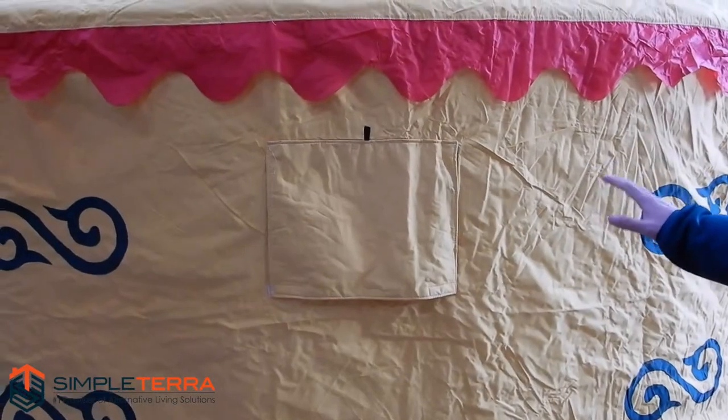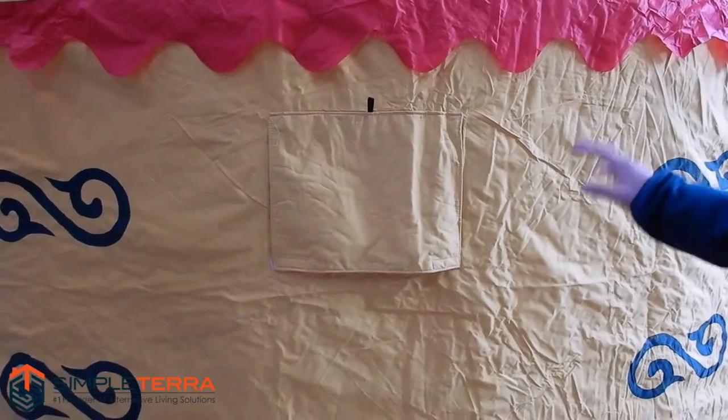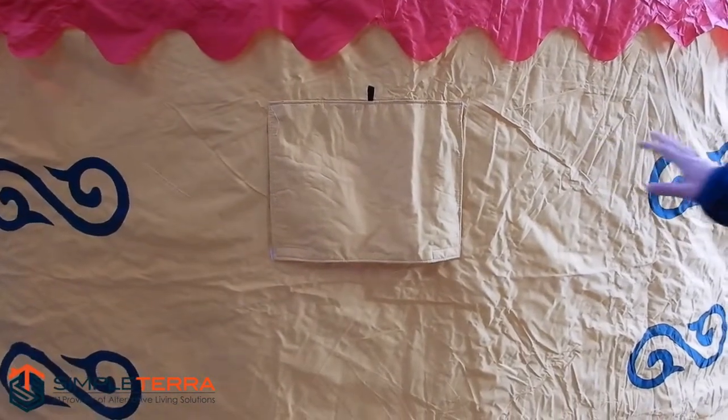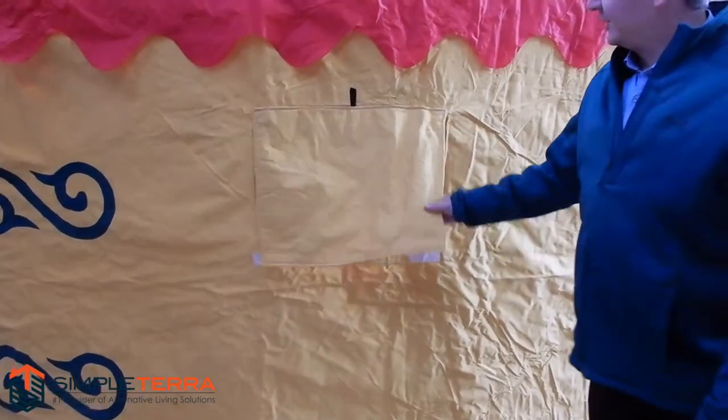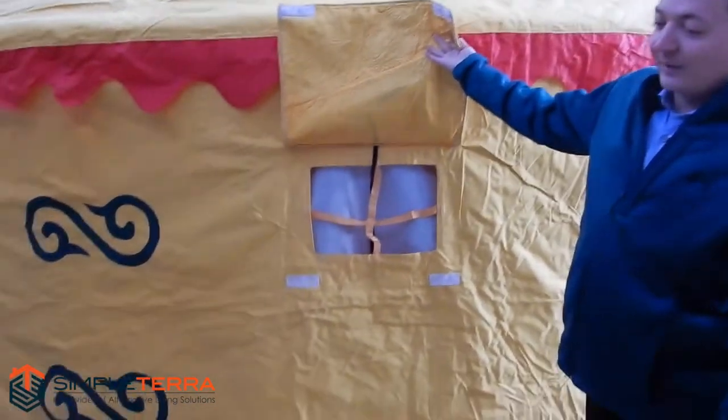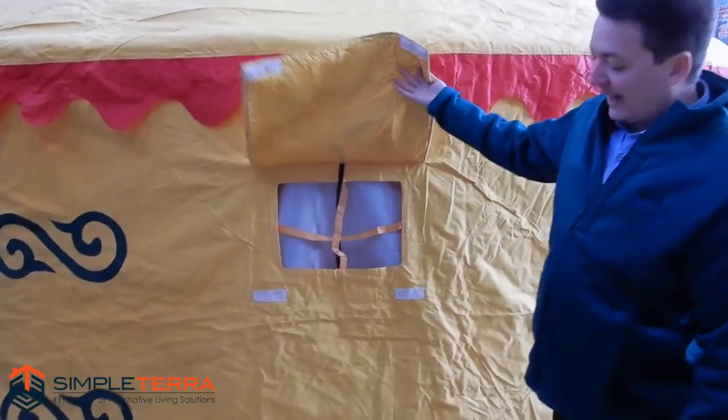This is our standard window with galvanized steel options. What's going to happen here is you can see the inner layers and everything underneath it.